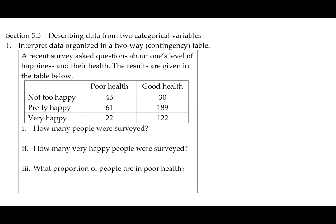In this survey, the observational units were asked to state what their health was. The options were either poor health or good health, and also to state their happiness status. The options were not too happy, pretty happy, or very happy. The values in this two-way table tell us the number of observational units that fell into these different categories.